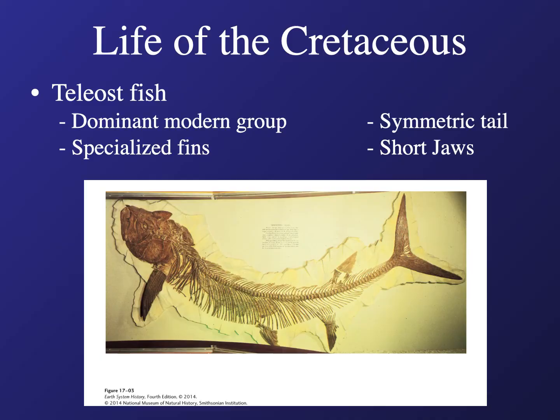During the Cretaceous there were a lot of changes in fish. Teleost fish became the dominant group. These fish had evolved specialized fins with a much more modern fin structure, and they developed a symmetrical tail. Previously, fish in the Triassic and Jurassic had those asymmetrical tails where the tailbone shot off at an angle. These symmetrical tails are probably more efficient and this structure continues into modern day fishes.